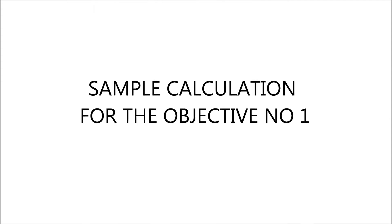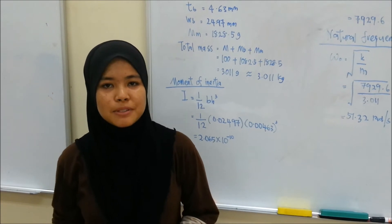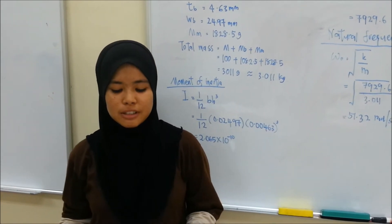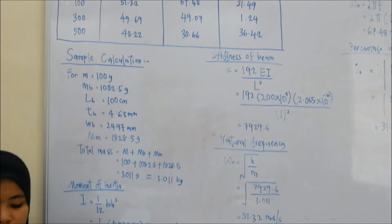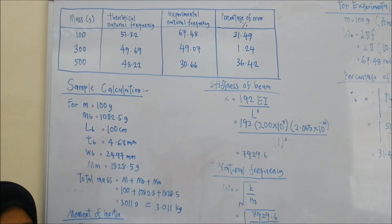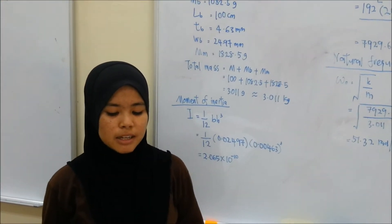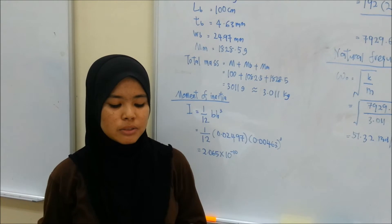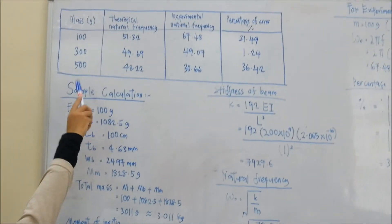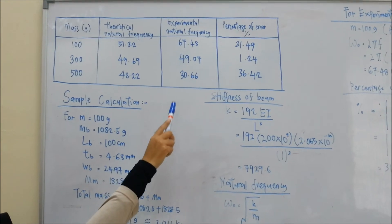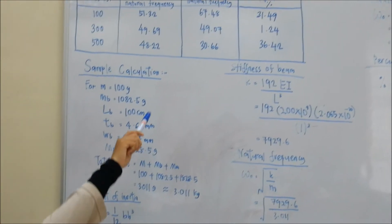My name is Masiti Isleha Bittanglin, A10042. I would like to talk about results and calculations. This is the calculation for the first objective: to determine the natural frequency from the experiment data and compare with theoretical natural frequency. Our table shows mass, theoretical natural frequency, experimental natural frequency, and percentage of error for three masses.